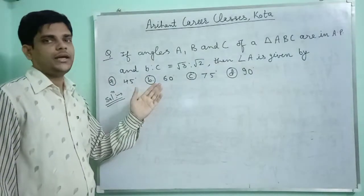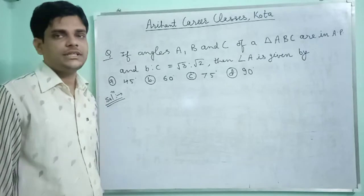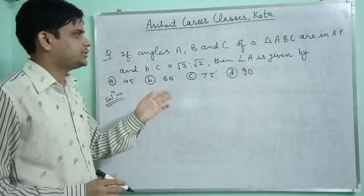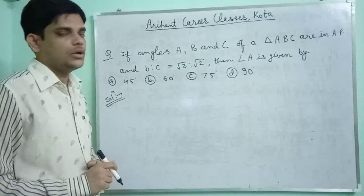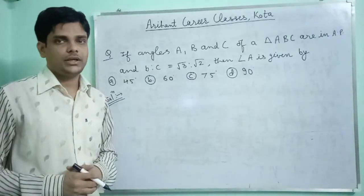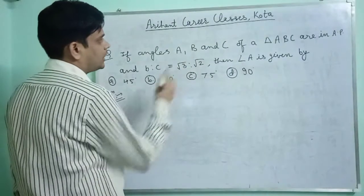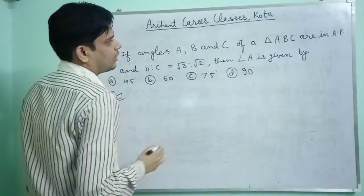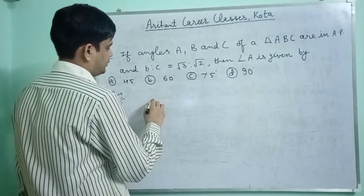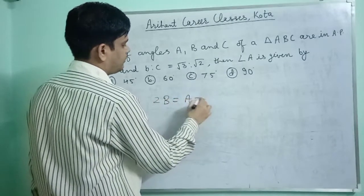If angles A, B and C of triangle ABC are in AP, and B is to C is equal to root 3 to root 2, then angle A is given by. Since angles are in AP, 2B is equal to A plus C.